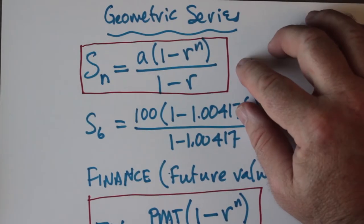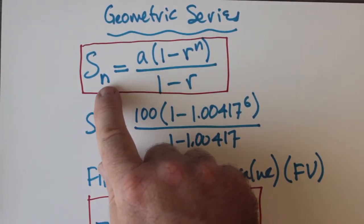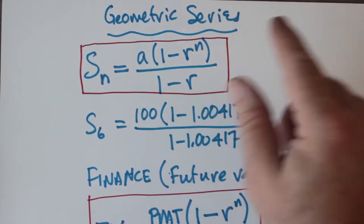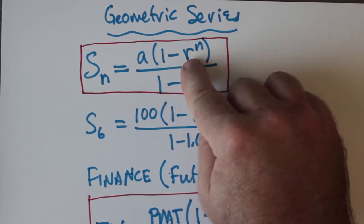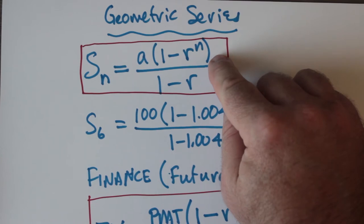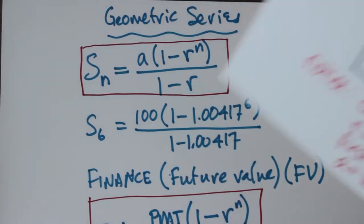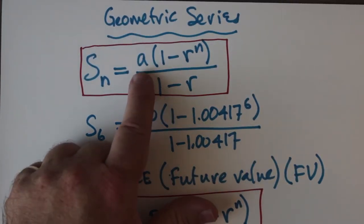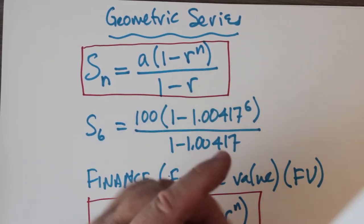The idea is here that SN, the sum of a certain number of terms in a geometric series, is equal to the first term times 1 minus the common ratio of each successive term, which we determined to be 1.00417. The first term in our problem was 100, and we divided that by 1 minus R. That's how we got here.